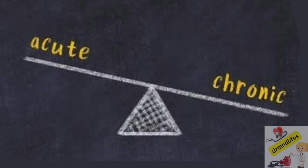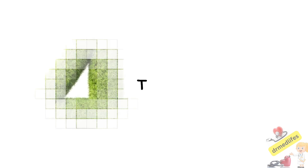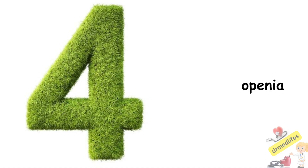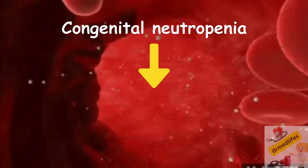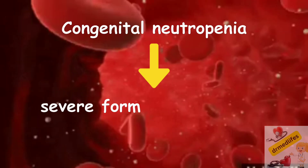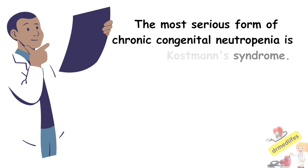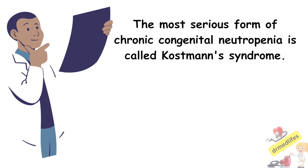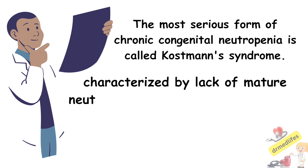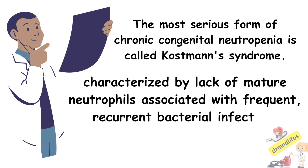Neutropenia can be acute or chronic. There are four main types of neutropenia. The first is congenital neutropenia, a severe form seen in babies or very young children. The most serious form of chronic congenital neutropenia is called Kostmann's syndrome, characterized by a lack of mature neutrophils associated with frequent, recurrent bacterial infections.